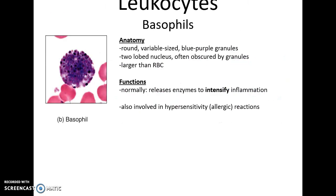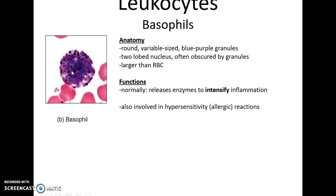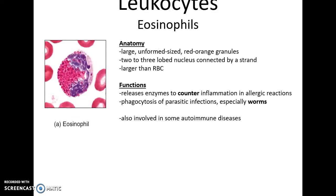Basophils are round with variable size. They have large blue-purple granules that can even block the view of the nucleus, which is often two-lobed. They are larger than erythrocytes. Their function is to release enzymes to intensify inflammation, and they are also involved in hypersensitivity reactions, aka allergic reactions.